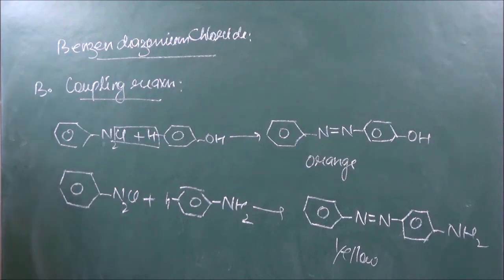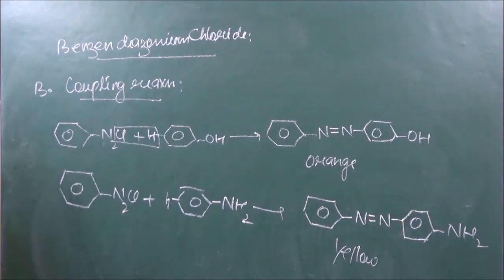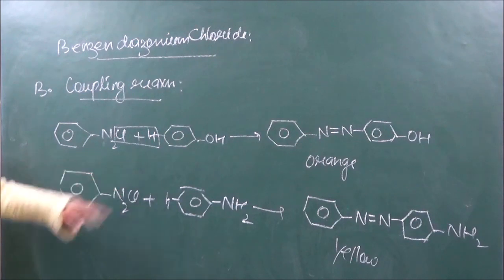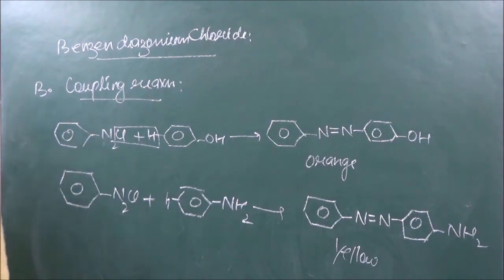In the Gattermann reaction we can prepare chloro and bromo compounds. We can also introduce the cyano group. Substitution or replacement of the diazo group by other groups helps us to form dyes as well. With these reactions, we have finished this chapter on amines.